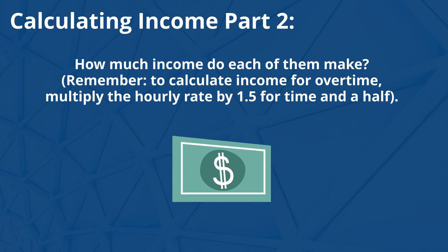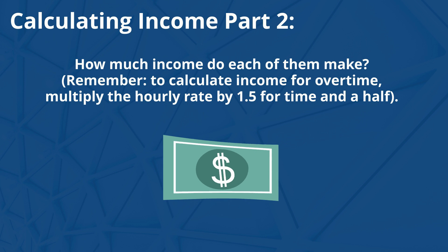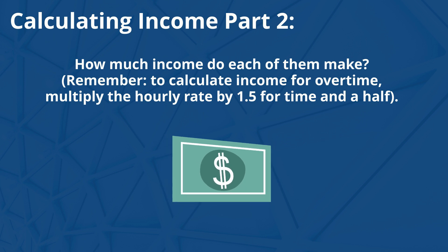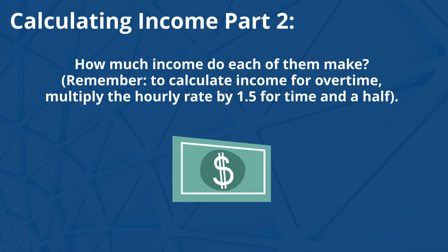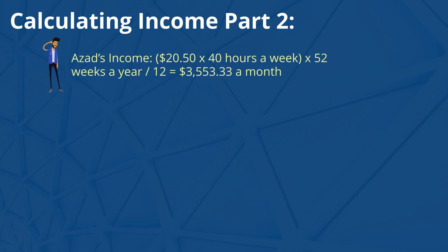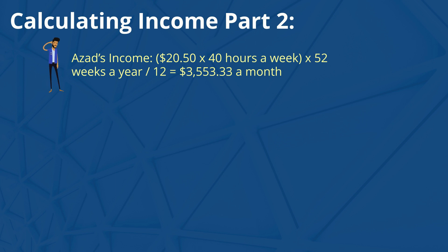Remember, to calculate income for overtime, multiply the hourly rate by 1.5 for time and a half. Asad's income: $20.50 times 40 hours a week times 52 weeks a year divided by 12 is equal to $3,553.33 a month.